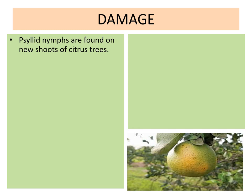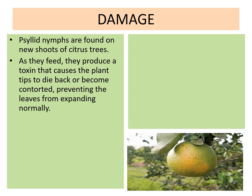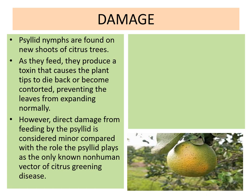Damage: Psyllid nymphs are found on new shoots of citrus trees. As they feed, they produce a toxin that causes the plant tips to die back or become contorted, preventing the leaves from expanding normally. However, direct damage from feeding by psyllids is considered minor compared with the role the psyllid plays as the only known non-human vector of citrus greening disease.